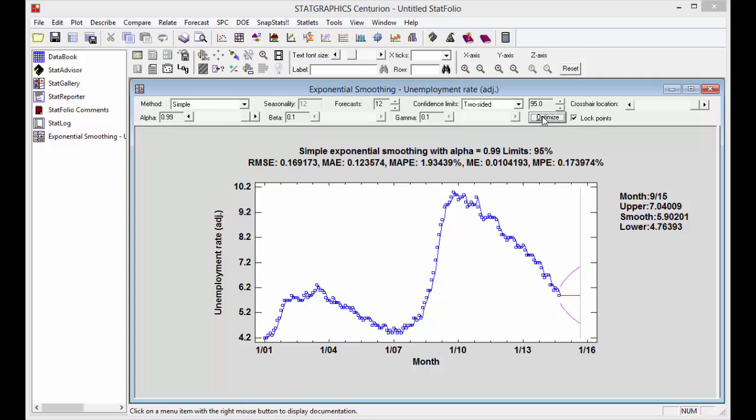If I push optimize on the toolbar, the statlet will automatically find the best value of alpha, the one that minimizes the error statistics. In this case, it finds a value for alpha of 0.99, a very large value.